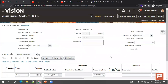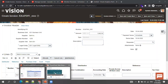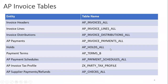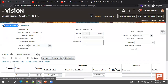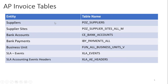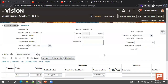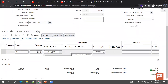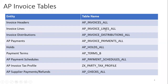Before proceeding to the SLA details, let's understand some basic tables of the AP invoice. First, the header information is stored in AP_INVOICES_ALL. The line information is in AP_INVOICE_LINES. The business unit is available in FUN_ALL_BUSINESS_UNITS_B, and the supplier is in the POZ_SUPPLIERS table, with supplier sites in a separate suppliers/sites table. Payment terms are in the AP_TERMS table. Lines and tax information are both available in AP_INVOICE_LINES. Distributions are available in AP_INVOICE_DISTRIBUTIONS_ALL.